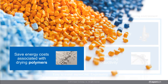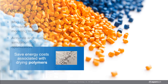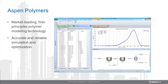The new extension of polymer modeling with solids modeling in Aspen Plus enables energy savings associated with dewatering and drying solids, among other benefits. Aspen Polymers is the market-leading first-principle polymer modeling technology available in Aspen Plus for accurate and reliable simulation and optimization of polymer processes.